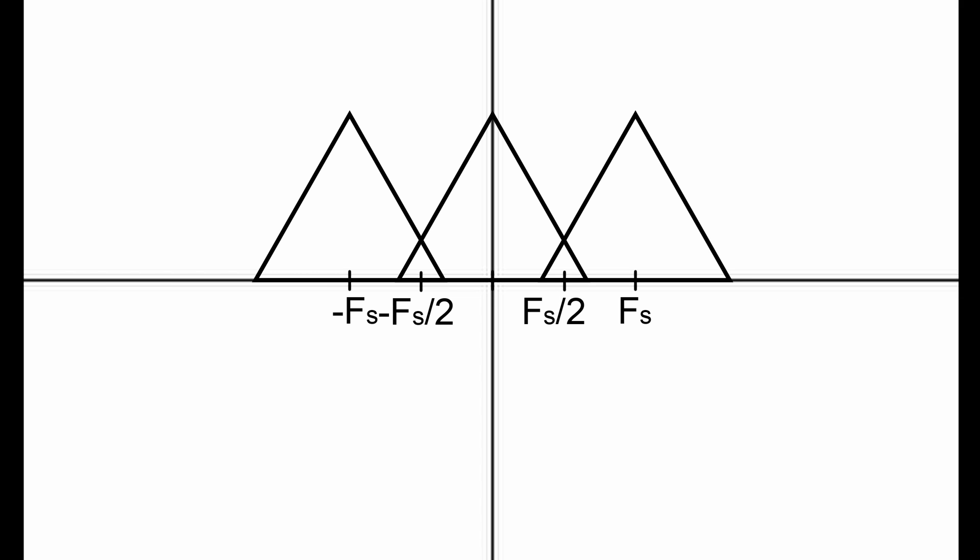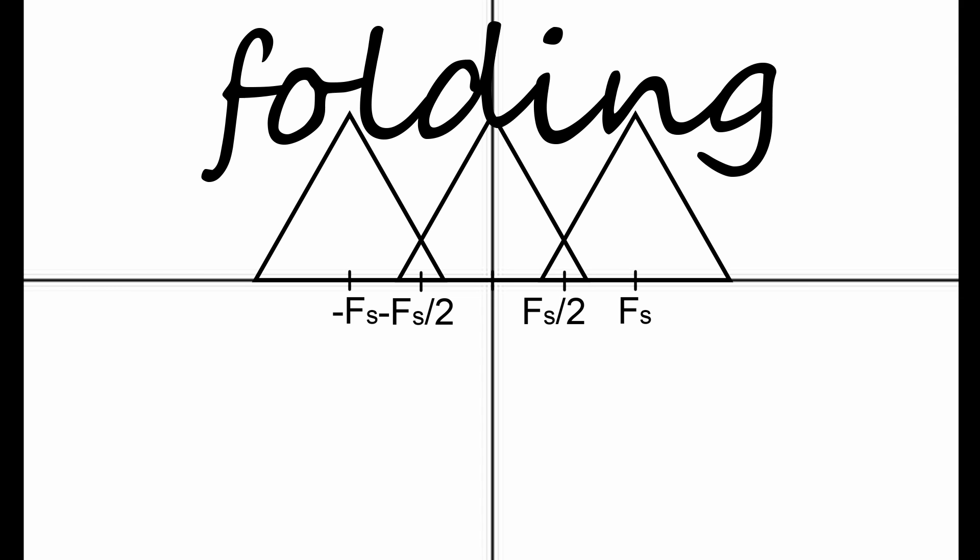This overlapping is called folding, which occurs when your input signal frequency is between half the sample frequency and the sample frequency, causing the negative frequencies of the first clone to be between zero and half the sample frequency.